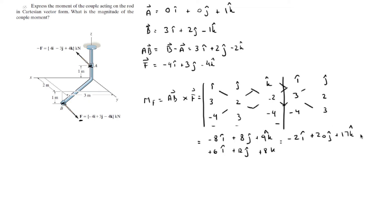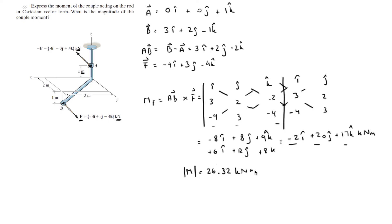This is in kilonewton-meters because the forces are in kilonewtons and the distances are in meters. To find the magnitude, take the square root of 2² + 20² + 17², which gives 26.32 kilonewton-meters. That is the final answer.